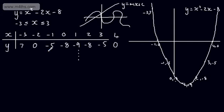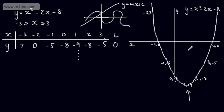Often we will be asked for the points of intersection with the coordinate axes — where it crosses the x-axis and where it crosses the y-axis. Sometimes we'll be expected to show the value of the maximum or minimum point, which is also called the vertex. We also need to make sure the graphs are clearly labelled.